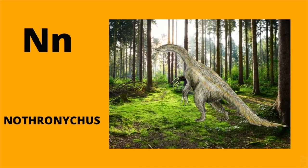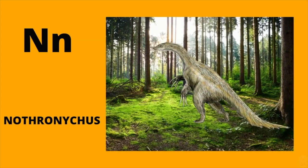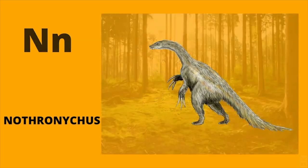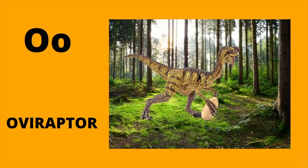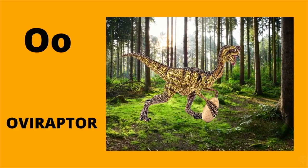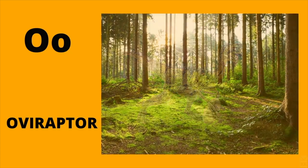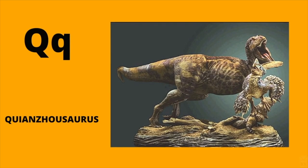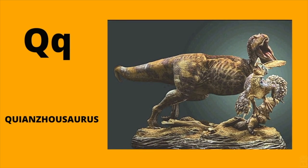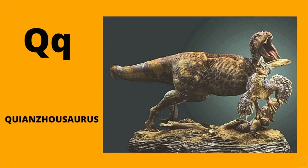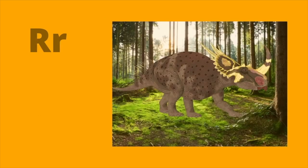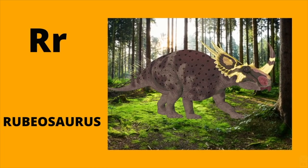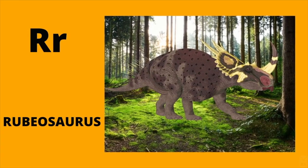N is for Neuquenraptor. Na, Neuquenraptor. O is for Oviraptor. O, Oviraptor. P is for Protoceratops. P, Protoceratops. Q is for Quaesitosaurus. K, Quaesitosaurus. R is for Rubeosaurus. R, Rubeosaurus.